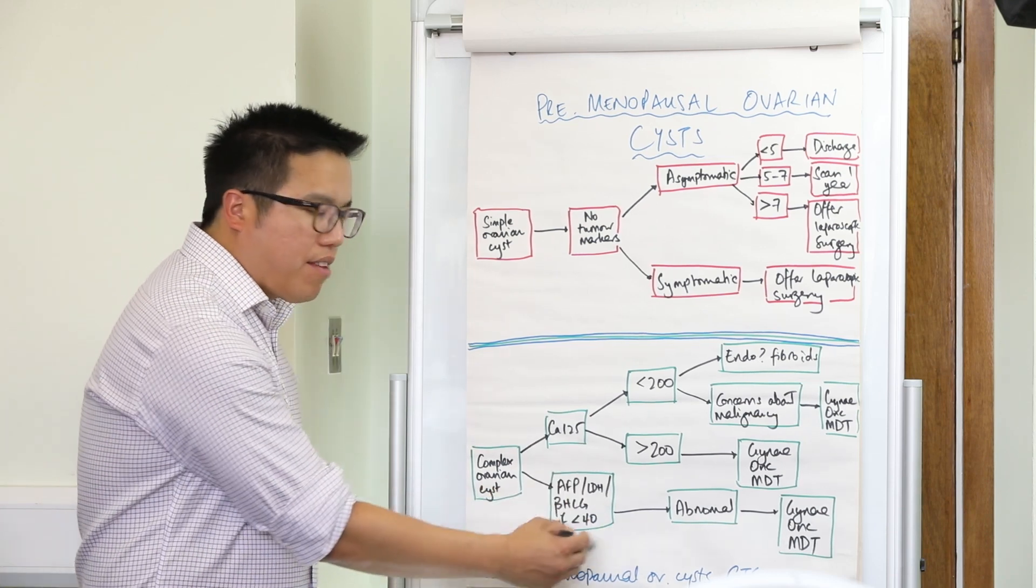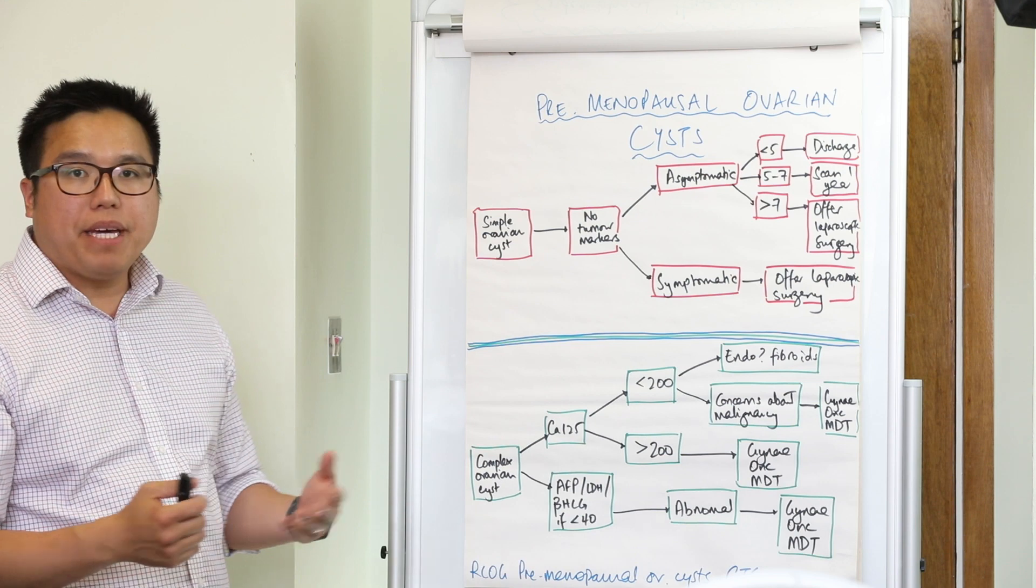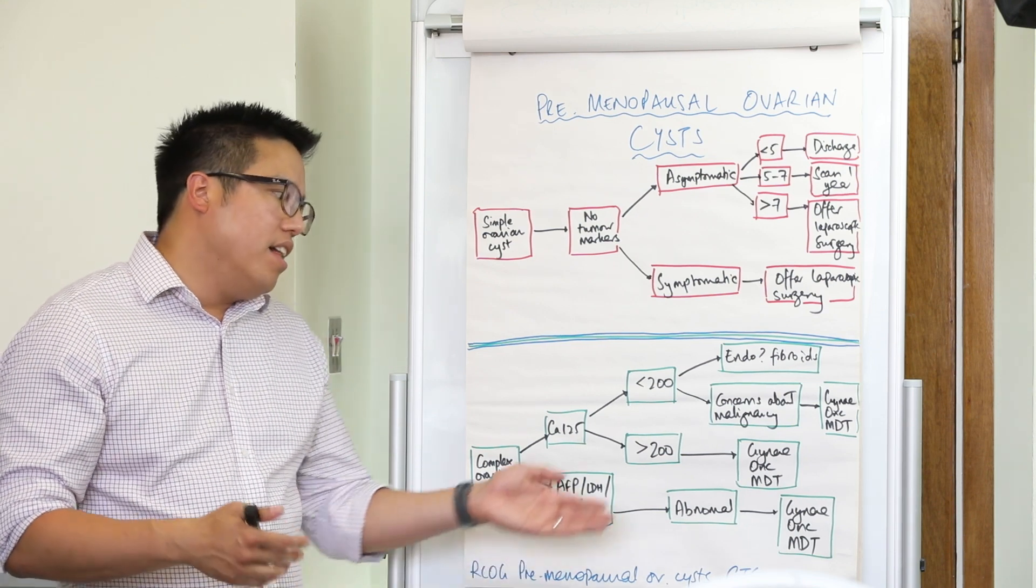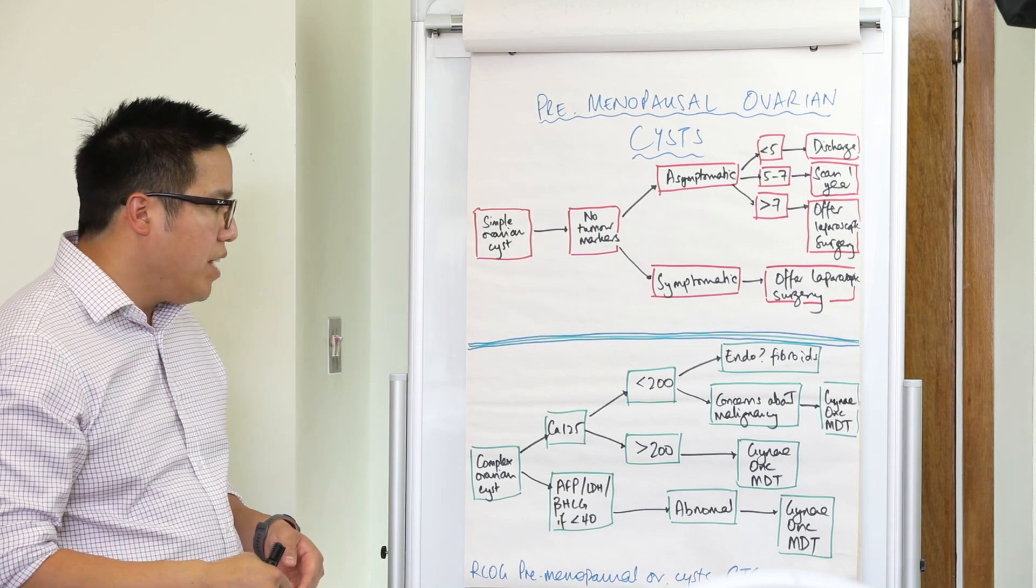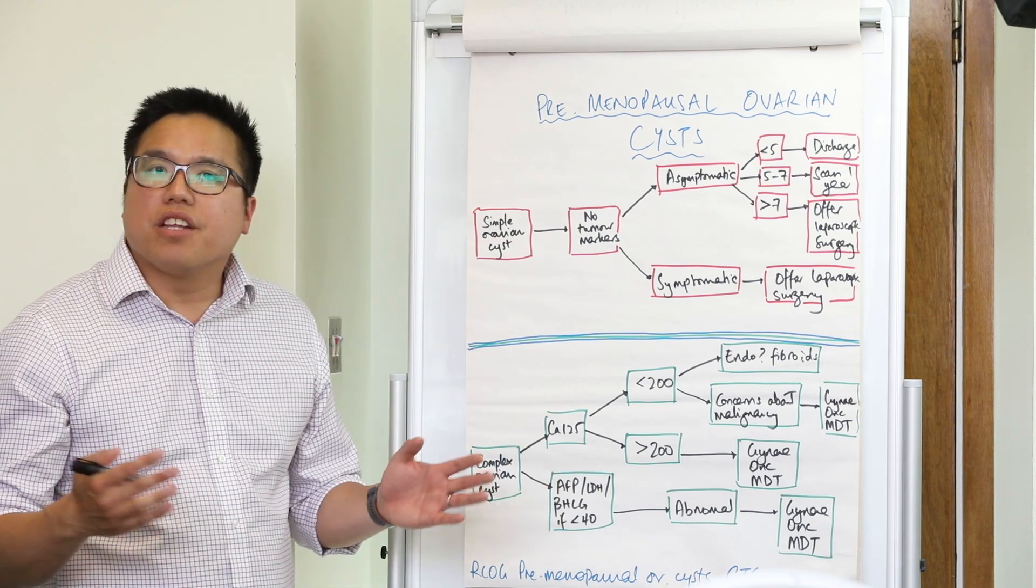Now clearly if these three hormones, the AFP, LDH, or beta-HCG are raised, that's easy—you're just going to refer straight to gynae oncology MDT. But if they're normal, we're then going to look at the CA125.